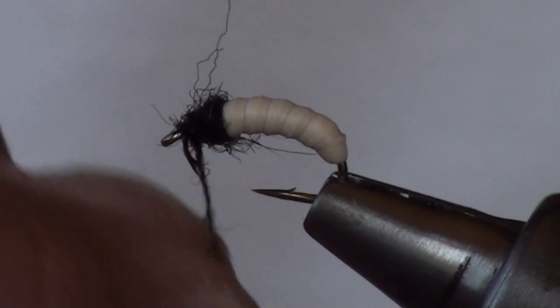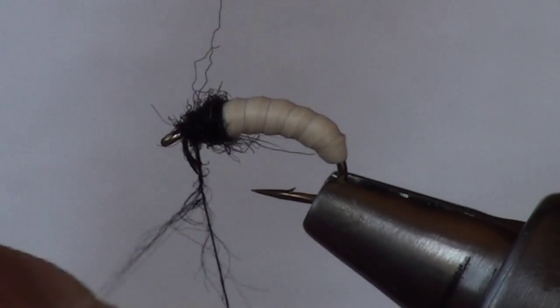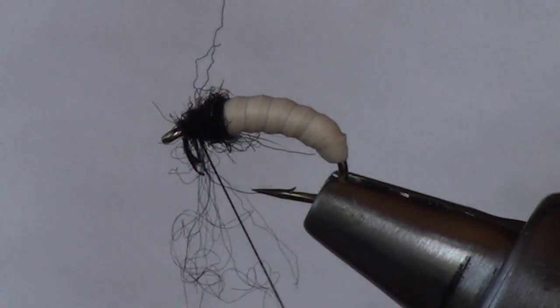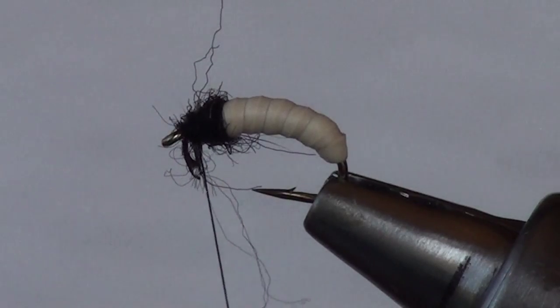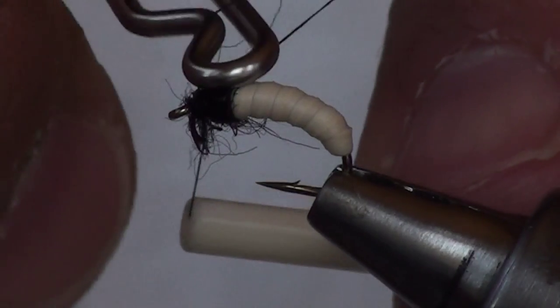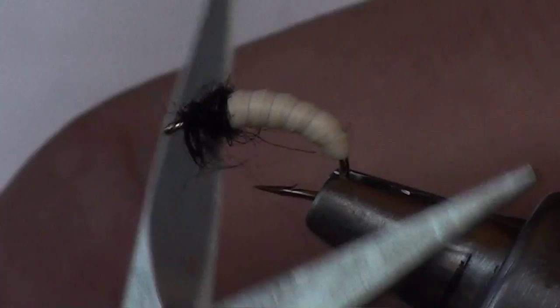Anytime you have too much dubbing, it's real easy. Just kind of work it down the thread, and you can pull it off. Don't just wrap it on because it's on your thread. If it's too much, it's too much. Whip finish. Three whips should do it. Slice away your thread.